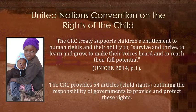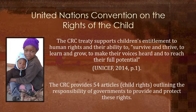Now, adopted in 1989, the Convention on the Rights of the Child is the most extensively ratified human rights treaty. It includes 54 articles, or child rights, that outline the responsibility of governments to uphold and protect these rights. Article 24 is a child's right to the highest attainable standard of health, and it includes infant and neonatal mortality statistics as one of the primary indicators of a child's right to health.